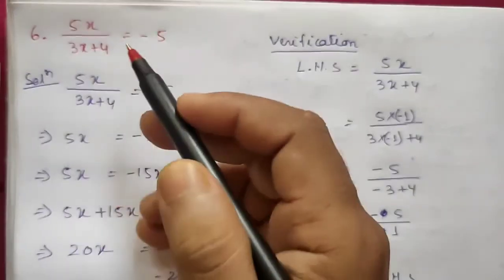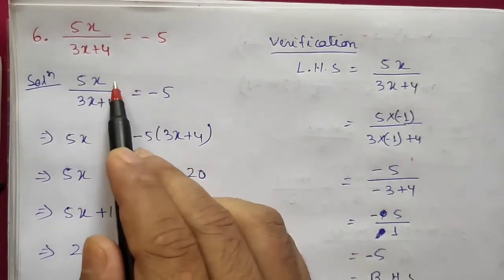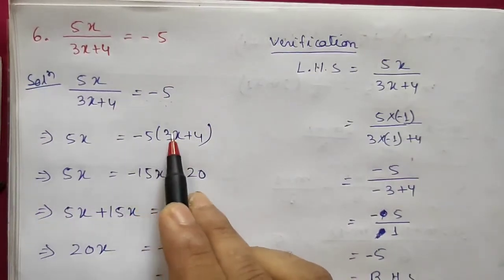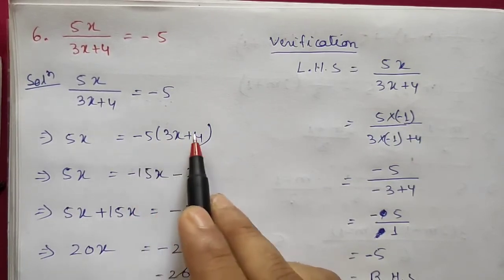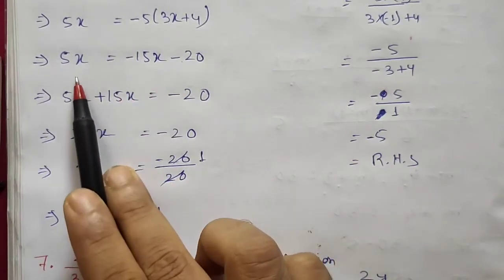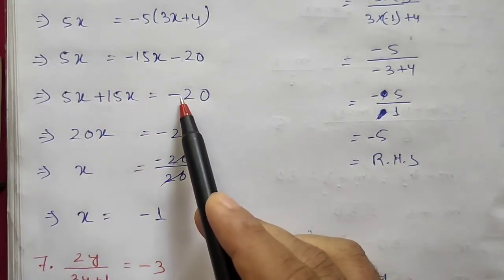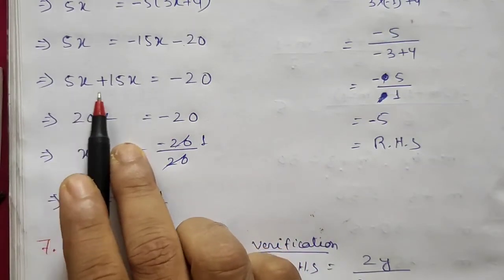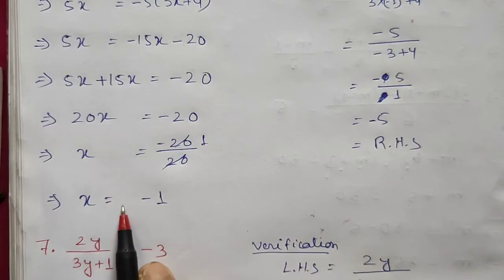Question 6: 5x / (3x + 4) = -5. Cross multiplying: 5x × 1 = -5 × (3x + 4). So 5x = -15x - 20. Transposing: 5x + 15x = -20, giving 20x = -20. Therefore x = -20/20 = -1.